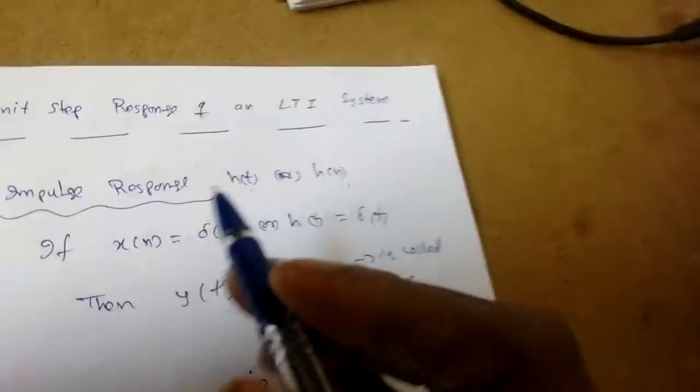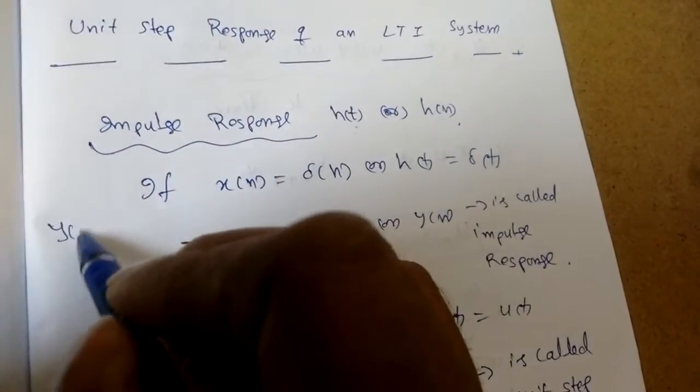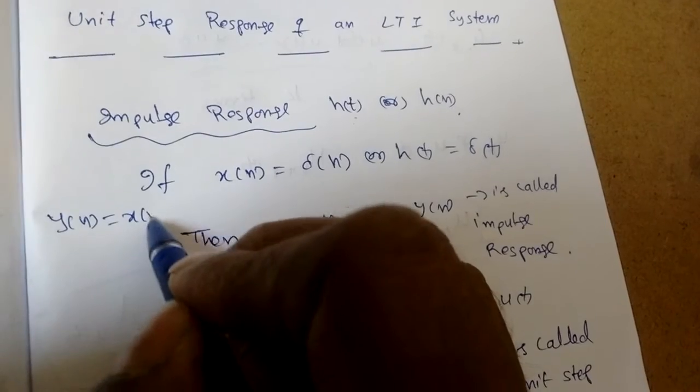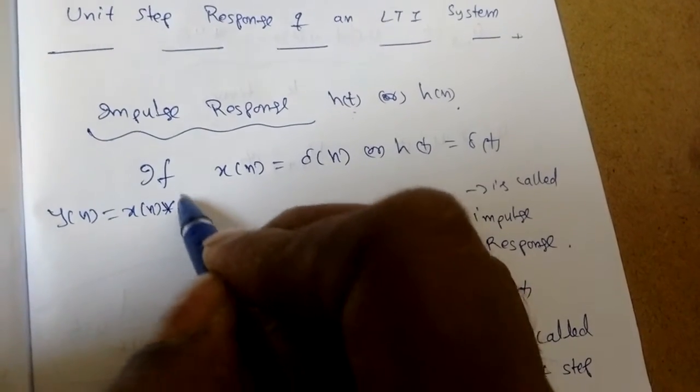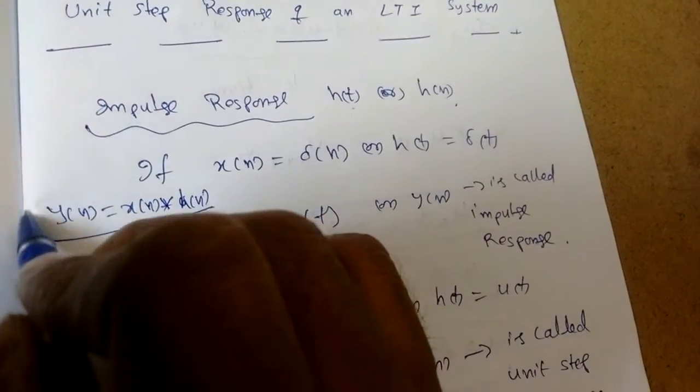We know that y(n) equals x(n) convolved with h(n). This is the response of any system.